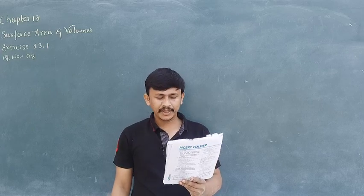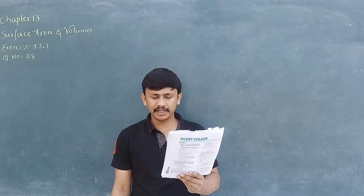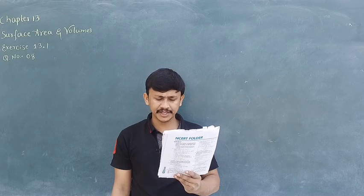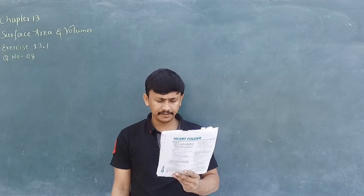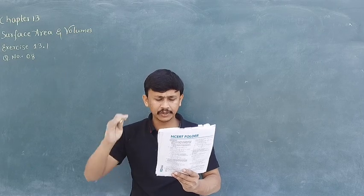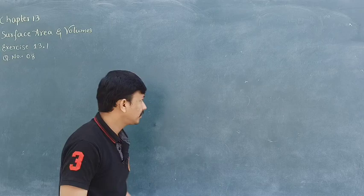8th question. Parveen wanted to make a temporary shelter for her car by making a box-like structure with tarpaulin that covers all the four sides and the top of the car.